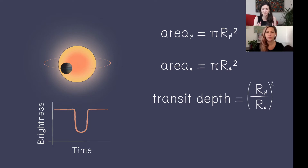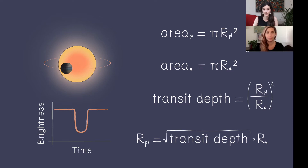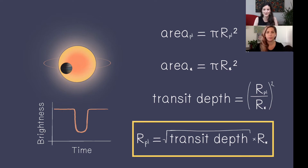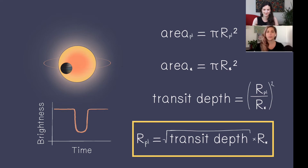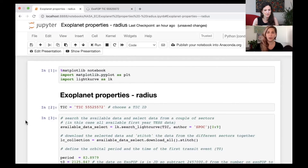What we're interested in is the radius of the planet, so we rearrange this equation and get the key formula highlighted in a yellow box: the planet radius equals the square root of the transit depth times the star radius squared. This is the only equation we actually need, and it will already be written down in a Python notebook for you — you just have to change a couple of numbers.